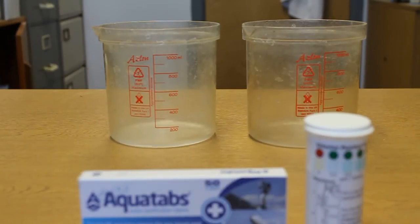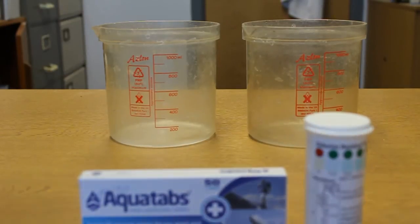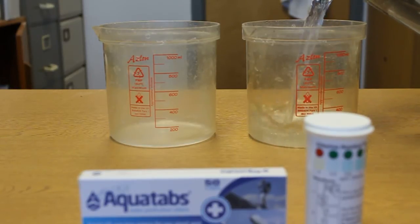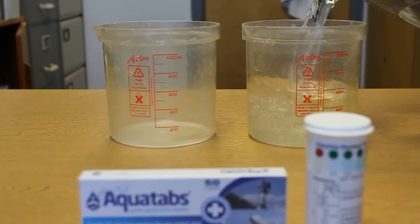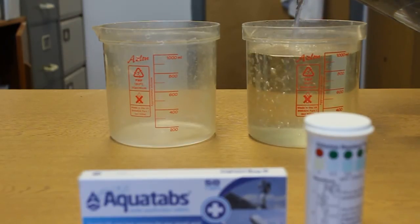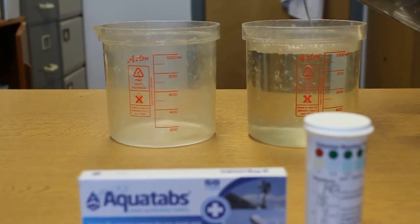The first thing you have to do is measure out a liter of test water sample. This water sample would be from the source that you intend to treat with the Medentech product, either Aquatabs or Aquacept. Fill the samples to the 1 liter mark.